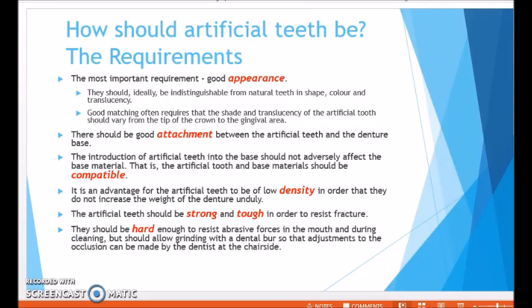Now, how should artificial teeth be? What are the requirements? The first requirement is good appearance. Ideally, they should be indistinguishable from natural teeth in their shape, color, and translucency. They should offer good matching because the translucency of natural teeth varies from the tip of the crown to the gingiva — the tip of the crown is usually more translucent compared to the gingival area, and this characteristic should be copied in artificial teeth.